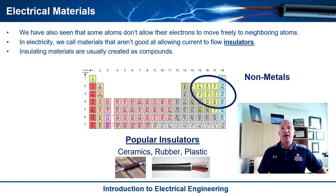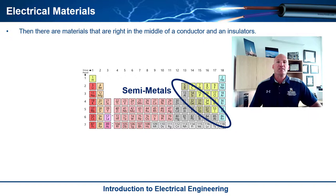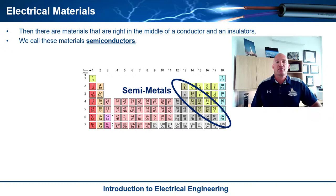The third class of materials is kind of right in the middle. They can allow their electrons to flow freely with their neighbors — and kind of not. So these are the semi-metals. In electrical engineering and electronics, these materials are what we call semiconductors. Some popular semiconductors are silicon, germanium, and gallium arsenide.